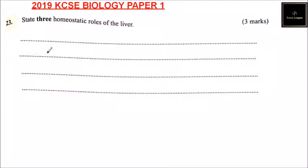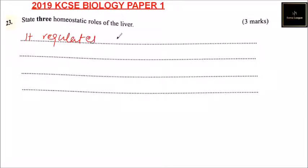Question number 23. Step 3: homeostatic roles of the liver, and you get three marks. You can say it regulates the blood sugar level.